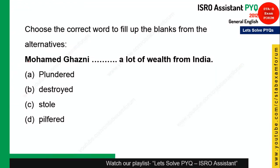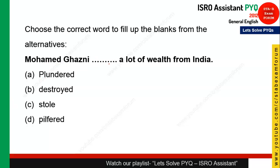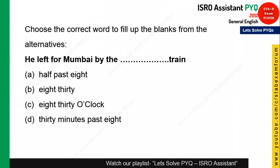This question is a tricky one. The statement is: 'Mohammed Ghazni ___ a lot of wealth from India.' All four options could fit, but the most appropriate is 'plunder'. Plunder is generally used in the context of looting during wars or invasions. Mohammed Ghazni plundered a lot of wealth from India. Option A is the right answer.